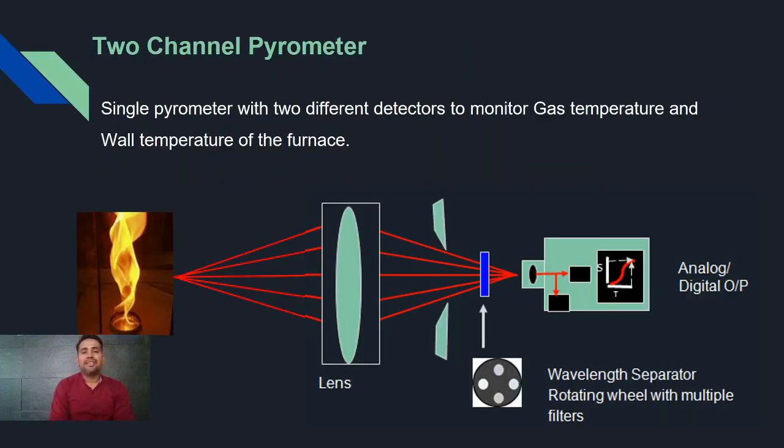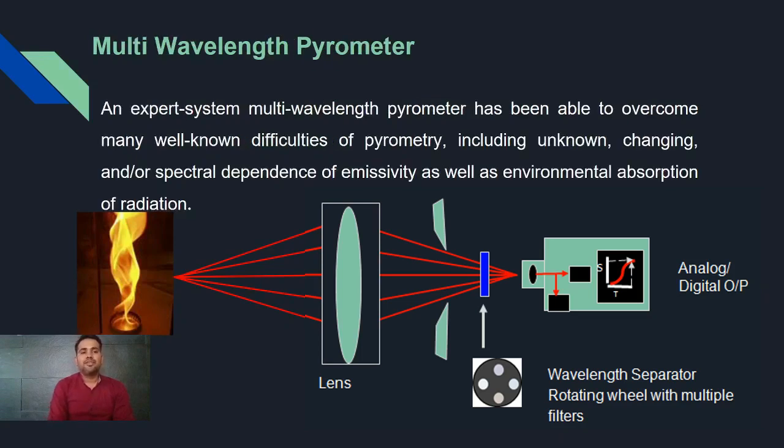Two channel pyrometer. In single pyrometer they will have two different detectors to monitor the gas temperature and the wall temperature of the furnaces. And the last one is the multi-wavelength pyrometer. It is an expert system, multi-wavelength pyrometer. It has the wavelength separator inside the pyrometer which is in terms of rotating wheel and multiple filters. It will work on different wavelength.